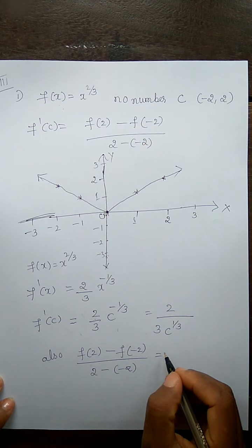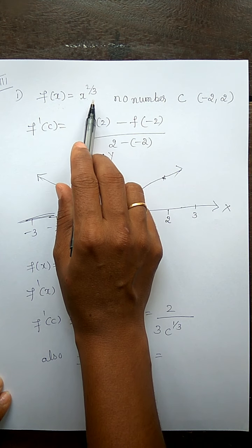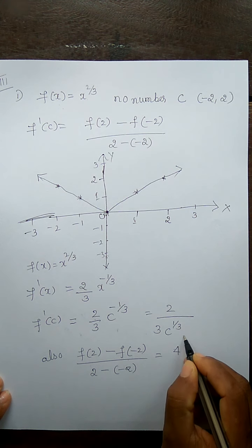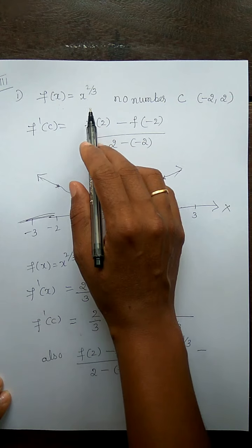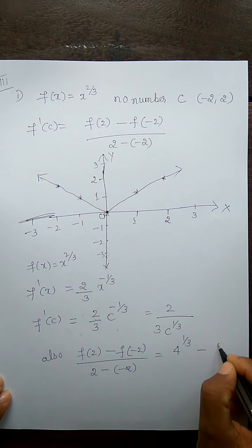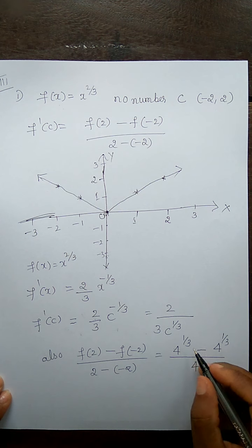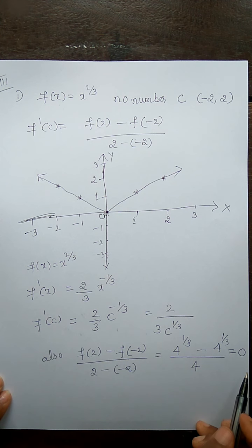Compute [f(2) - f(-2)] / [2 - (-2)]. f(2) = 2^(2/3) = 4^(1/3). f(-2) = (-2)^(2/3) = 4^(1/3). So numerator = 4^(1/3) - 4^(1/3) = 0, and denominator = 4. Therefore f'(c) = 0. So we need 2/(3·c^(1/3)) = 0.